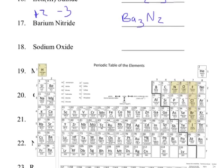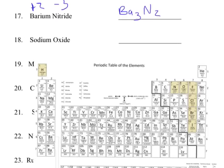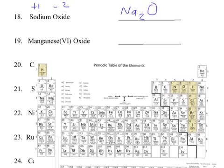Now sodium oxide: sodium is plus 1 and oxygen is minus 2. I put Na and give it oxygen's number, 2. Then I put O and give it sodium's number, 1. That gives Na2O. This is not hard at all.